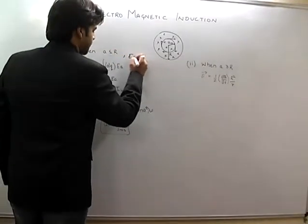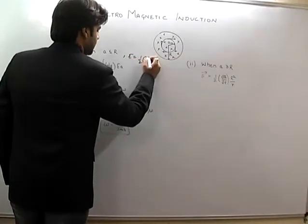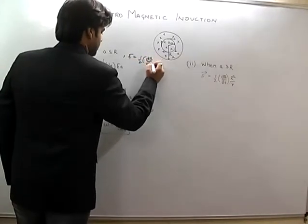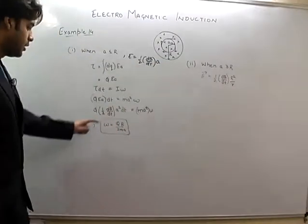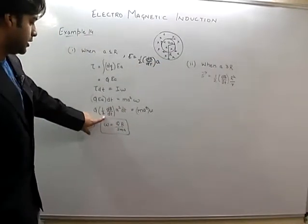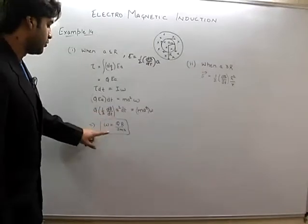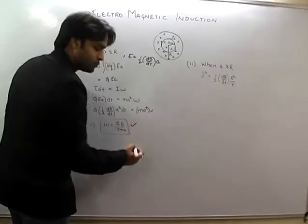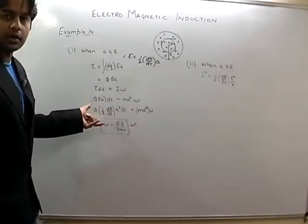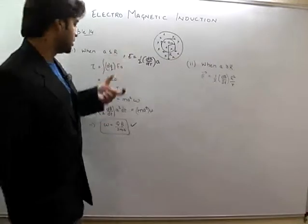So q E into a into dt is equal to ma squared into omega. Now E's value, which we know inside the region, E is equal to half of dB/dt into a. So I put this value here, dt cancels, then my omega value is equal to qBa divided by 2ma squared.